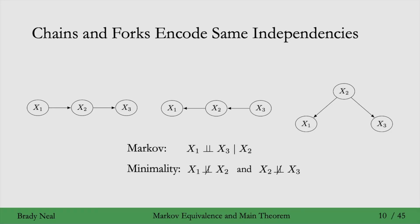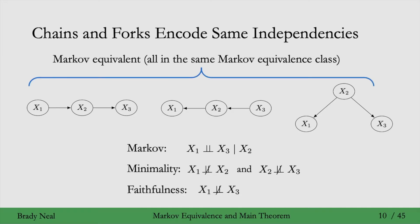Minimality also told us that x1 is dependent on x2 and x2 is dependent on x3. Faithfulness will be guaranteeing that x1 is dependent on x3. Minimality didn't quite guarantee this because there can be some intransitive cases. But the main thing to focus on here is just what the Markov assumption tells us. The key point I want to emphasize, with these three graphs all implying the same conditional independence given the Markov assumption, is that these three graphs are Markov equivalent.